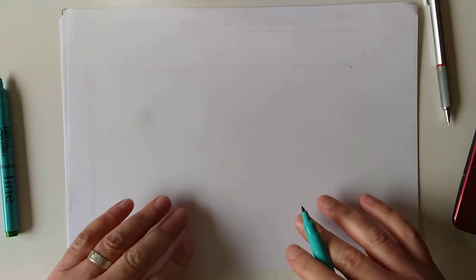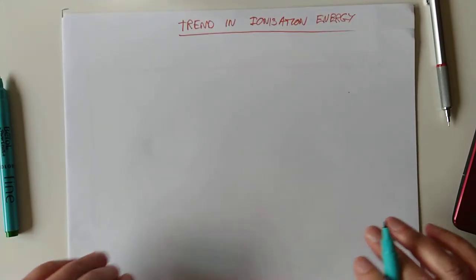Right folks, let's have a look at the second trend in our periodic table of videos. The second trend is the trend in something called ionization energy.